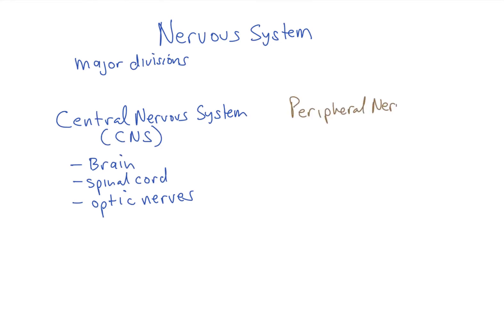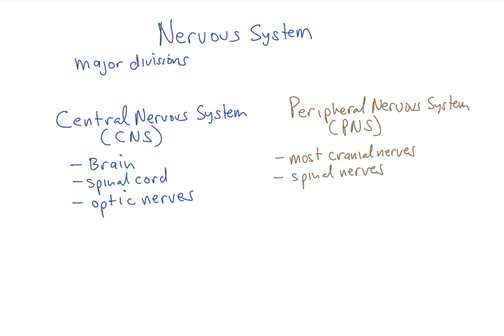The peripheral nervous system or PNS is made up of most of your cranial nerves, except for the optic nerves and olfactory nerves. It includes your 30 pairs of spinal nerves and their associated named peripheral nerves, as well as sensory receptors.